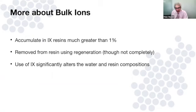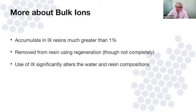There are some fundamental differences between bulk ions and trace ions with respect to ion exchange resin. Bulk ions accumulate in the resin to much greater than one percent, and because throughputs tend to be short — we're loading the resin up rather quickly — most bulk ion removals are associated with a regeneration process. The resin is cycled between exhaustion and regeneration hundreds or even thousands of times, making the regeneration cycle every bit as important as the exhaustion cycle.